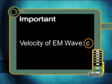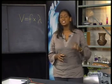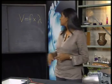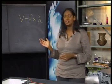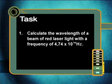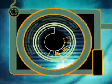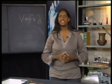Now, remember that the velocity of any wave is related to its frequency and wavelength by the equation V equals F times lambda. I want you to use this relationship to complete your calculation for today's task. Calculate the wavelength of a beam of red laser light with a frequency of 4.74 times 10 to the 14 hertz. In our next lesson, we will explore the electromagnetic spectrum in more detail. Bye for now.